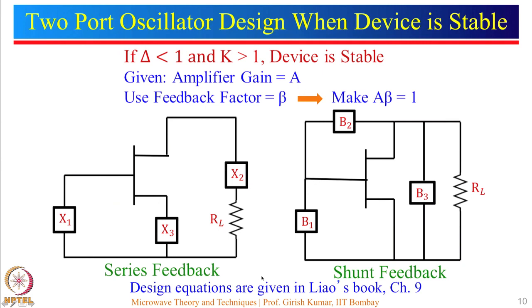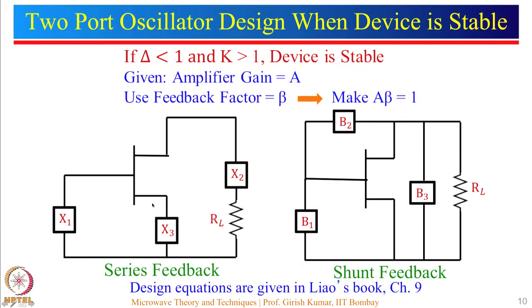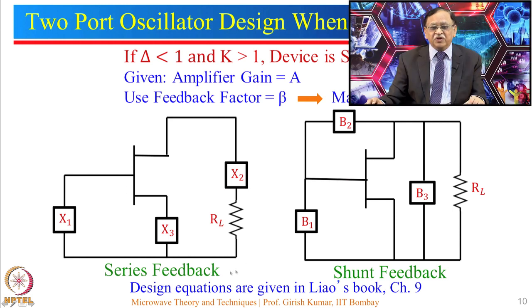Now let us consider when the device is stable — delta is less than 1 and k is greater than 1. For a stable device, the first step is to design an amplifier with gain A, then use a feedback factor beta such that A·beta equals 1. Again, choose A·beta greater than 1 — around 1.1 to 1.2 — to start the oscillation. The device is connected so that one portion is the input side, another is the load side, and X3 is common to both, forming series feedback.